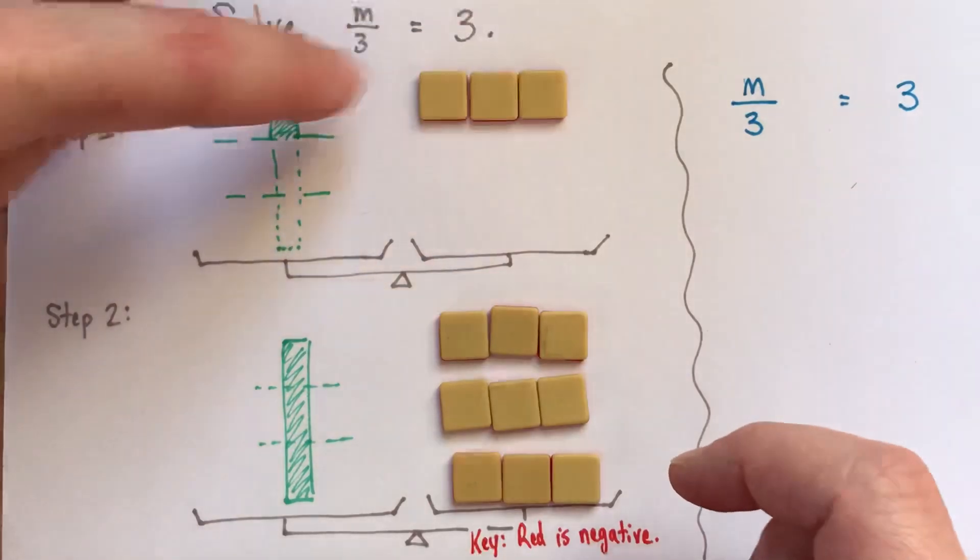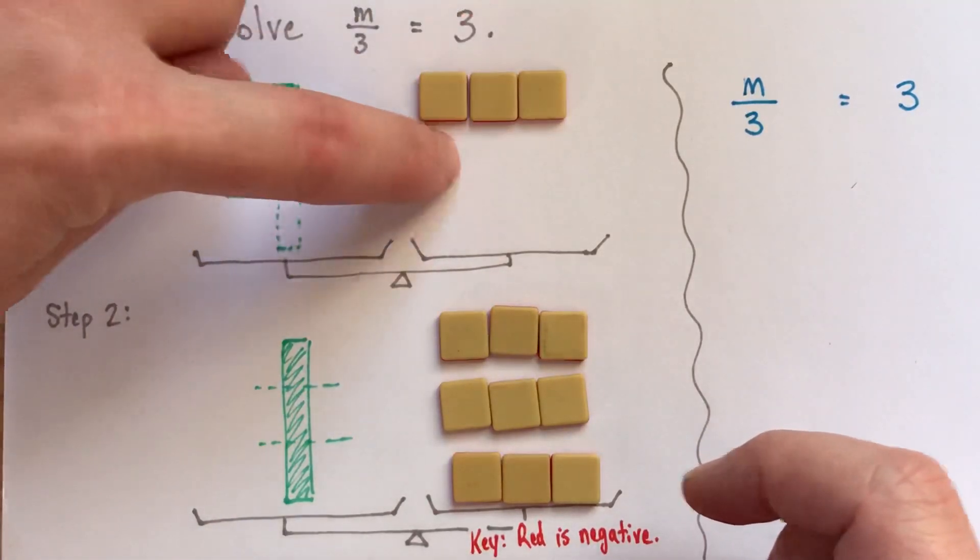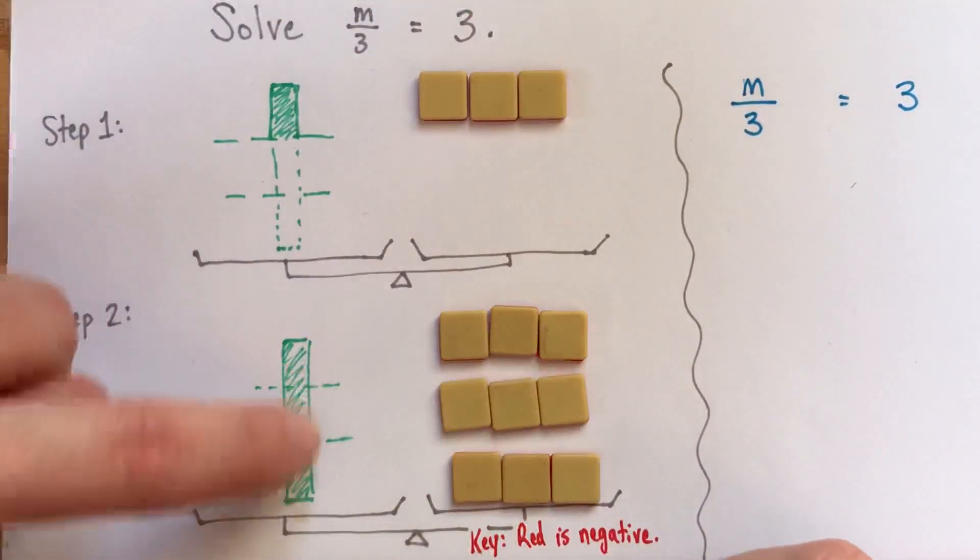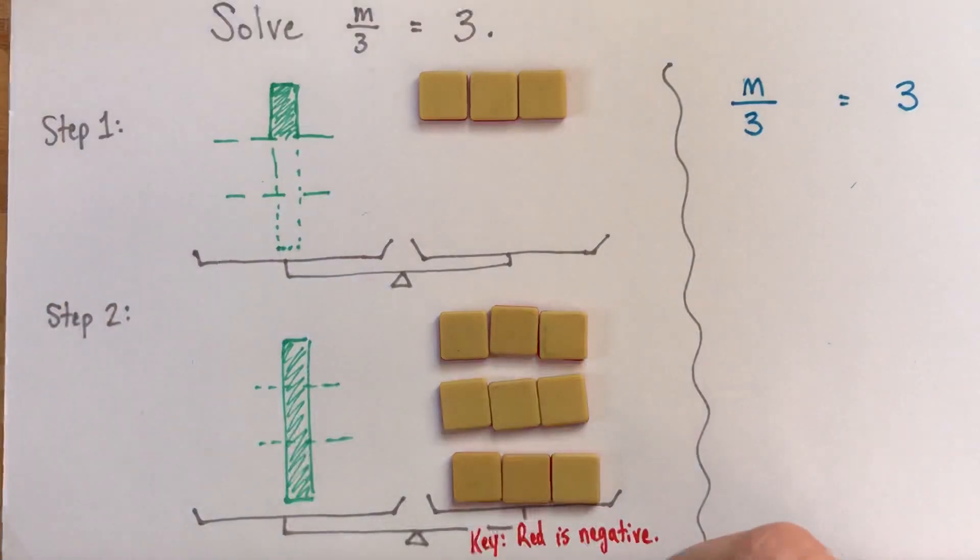Each third was worth 3, so the top third is worth 3, the middle third is also worth 3 here, and the bottom third is worth 3. So, the solution to this equation is m equals 9.